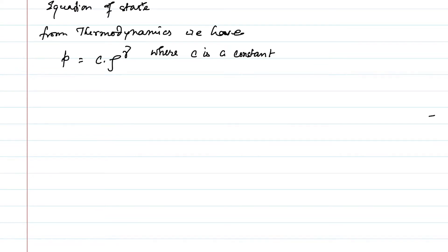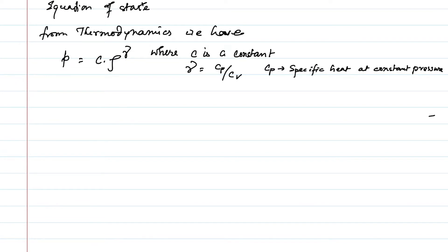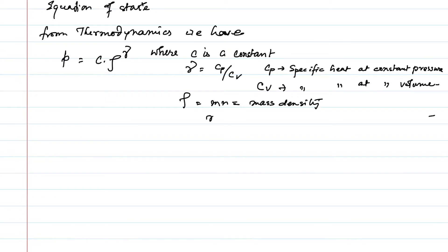Gamma is equal to cp divided by cv, where cp means specific heat at constant pressure and cv means specific heat at constant volume. And rho equals m times n, which is the mass density, where n is the number of particles per unit volume.